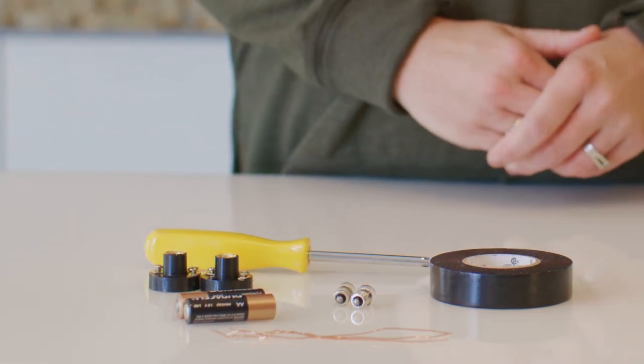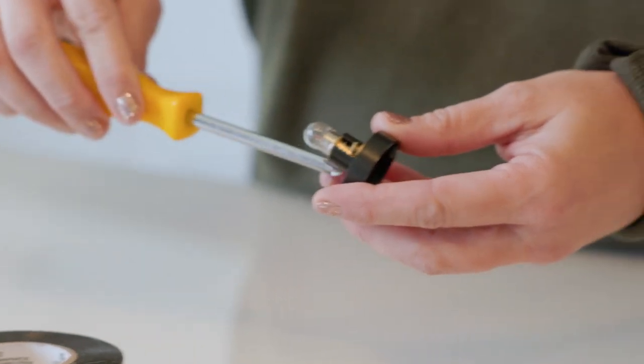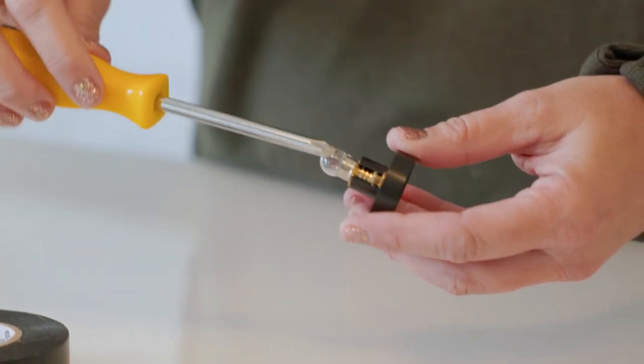We'll first take one of the light bulbs and screw it into a bulb holder. Using the screwdriver, go ahead and loosen these screws.